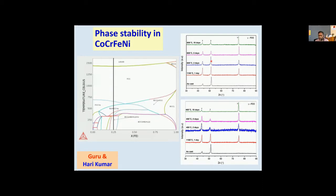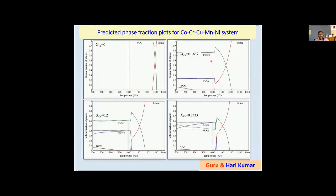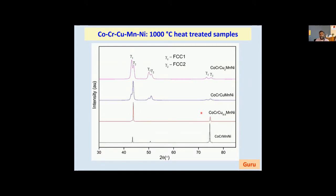We can also do what happens when I add elements. For example, I can take the cobalt-chromium-manganese-nickel alloy, which is supposed to be FCC. The phase diagram shows it is all FCC at 1000 degrees centigrade. But if I add copper, the moment copper is added, copper does not dissolve into chromium or cobalt — copper is immiscible with cobalt and chromium. As a result, copper starts giving you a second FCC phase because copper's structure is also FCC. So you start getting two FCCs — FCC1 and FCC2. The XRD shows: without copper, a single set of FCC peaks; the moment I start adding copper, another peak comes up and becomes bigger and bigger.